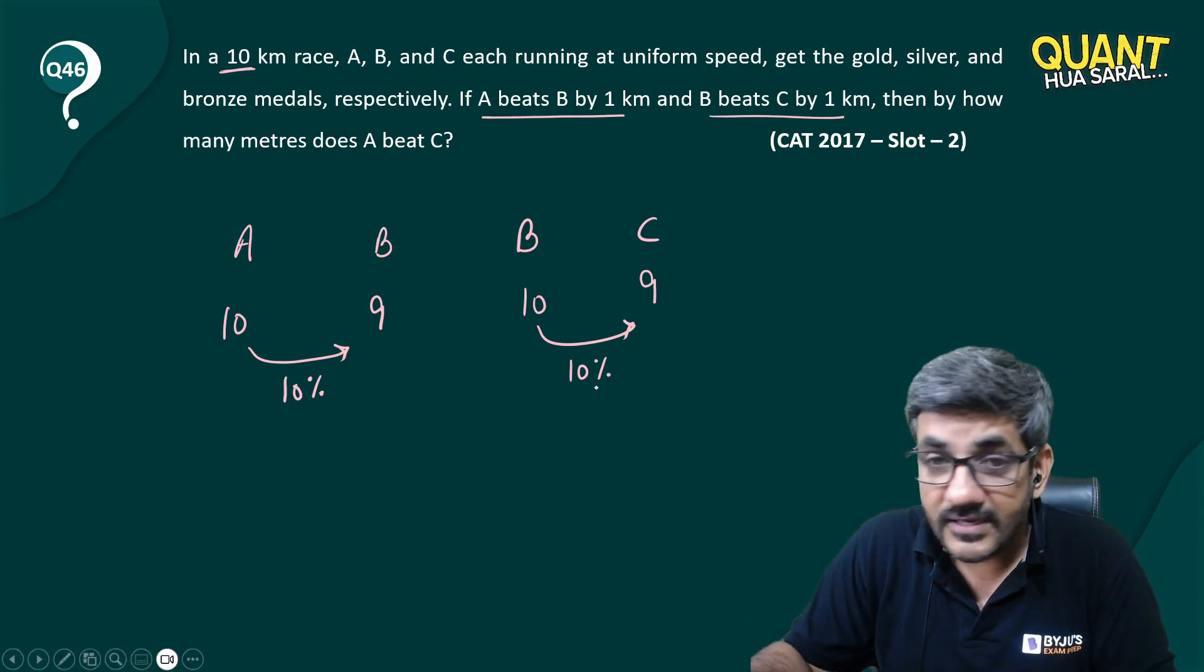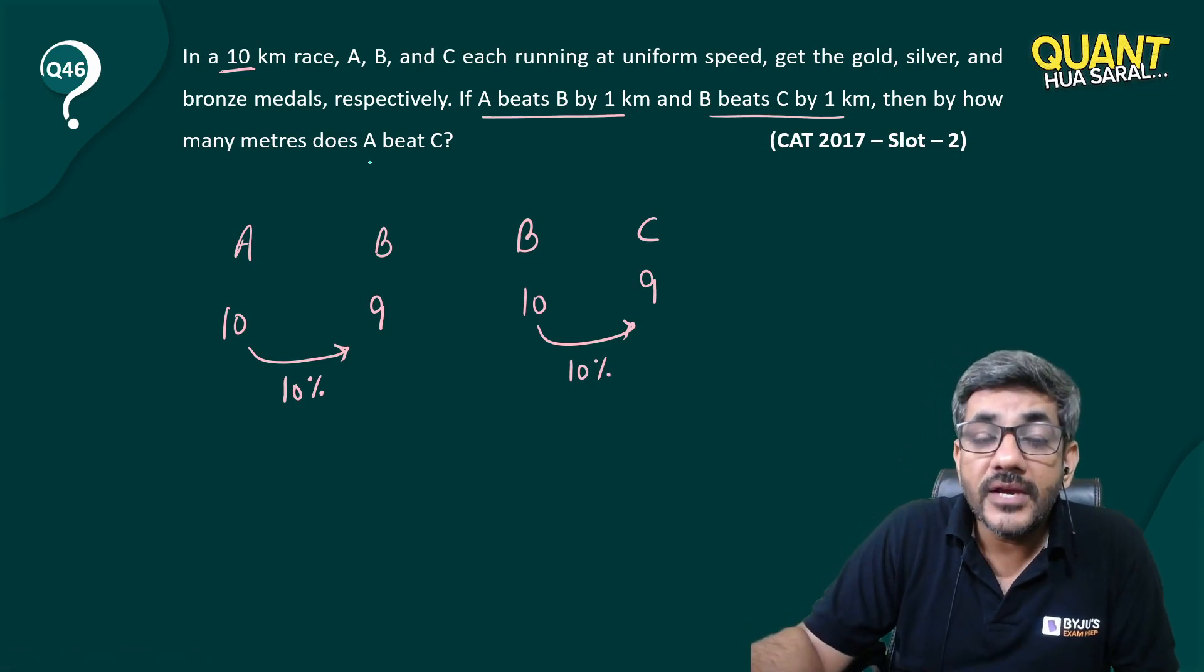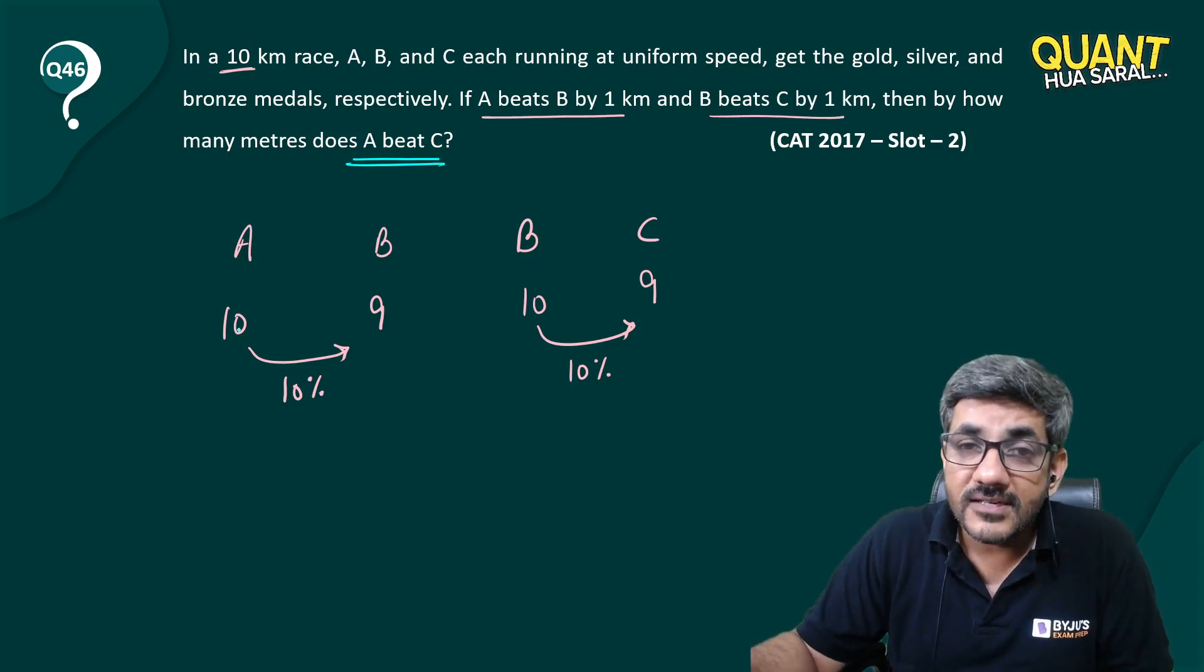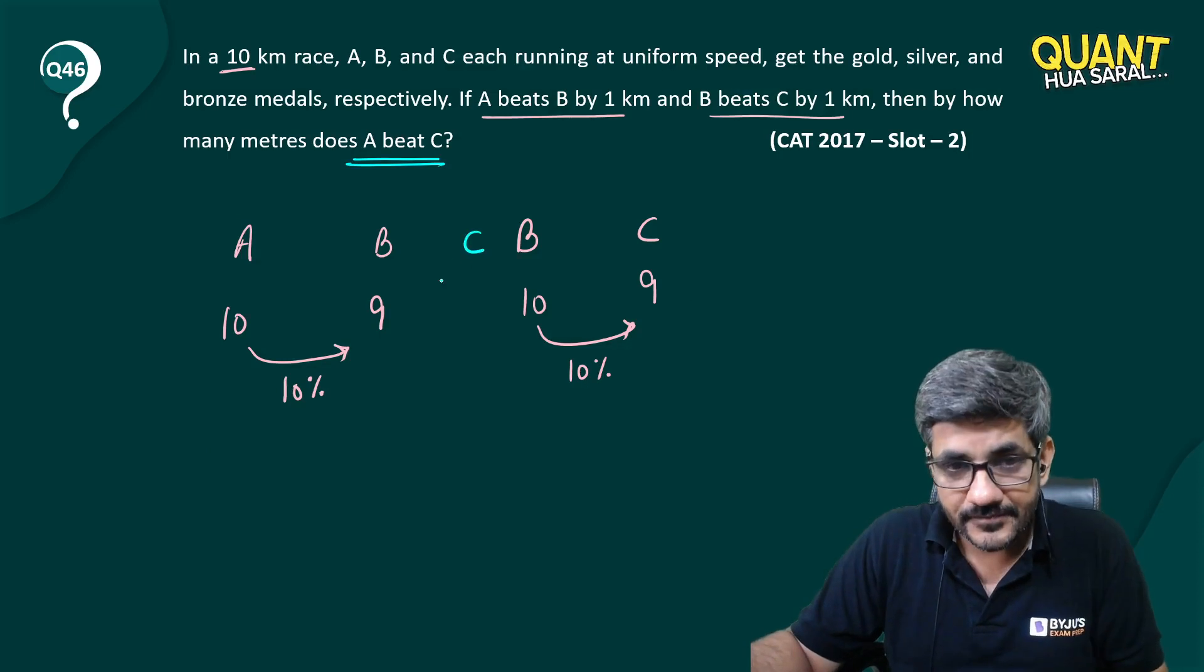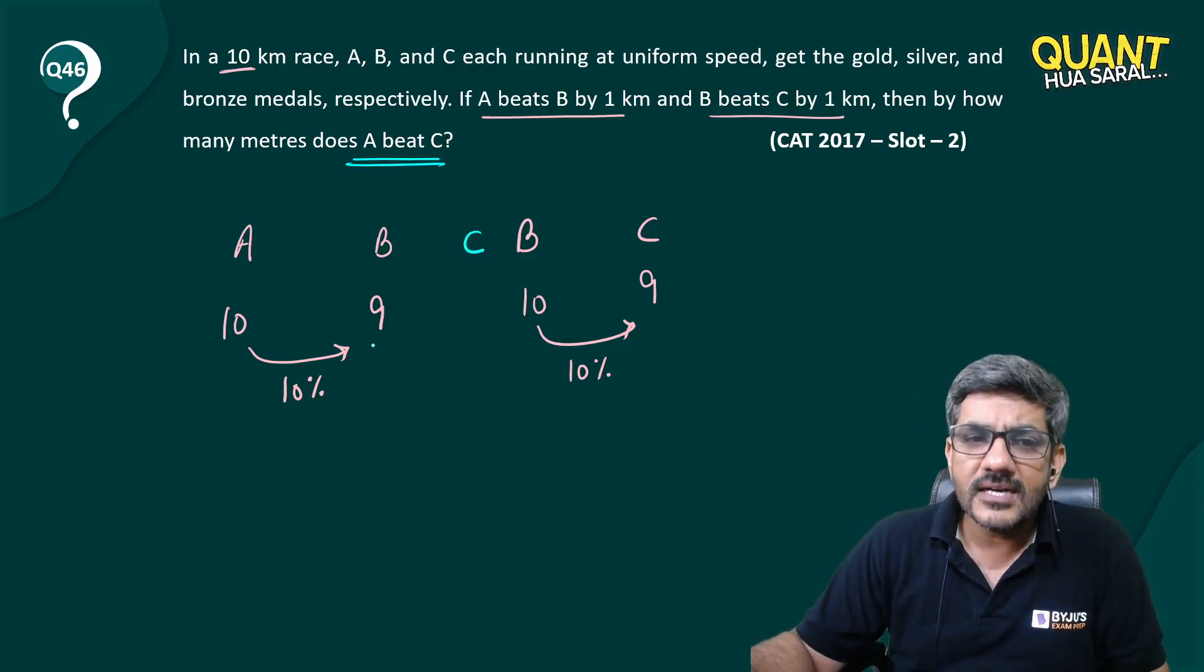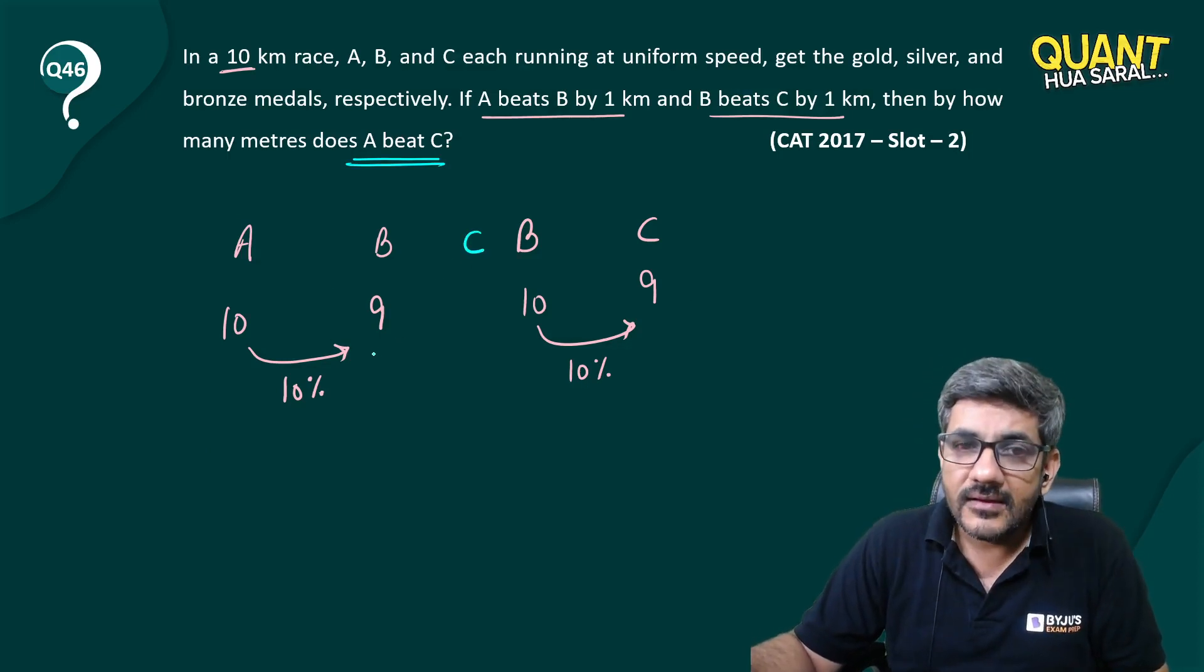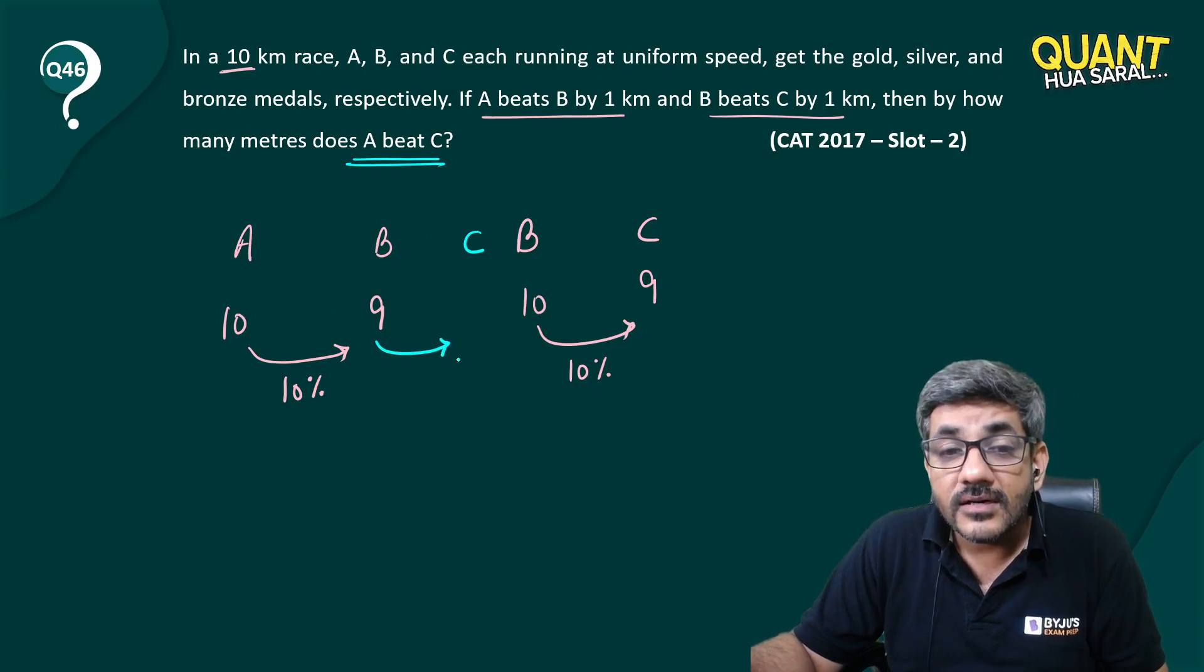is the question asking you? The question says by how many meters A beats C. So when A covers 10, B covers 9 at the same time. How much has C covered? So if B has covered 10 percent less than A, that means C would have covered another 10 percent less than B. And 10 percent less than 9 is